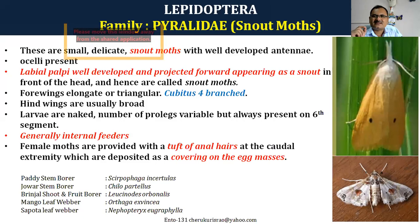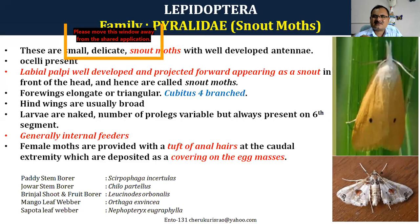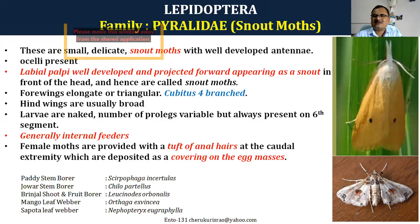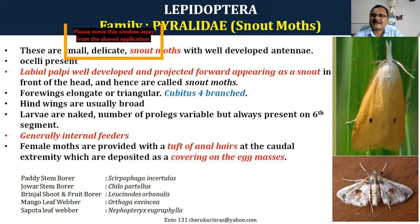Remember two important points about Pyralidae: one, the labial palpi are well developed and projected forward — that is why we call them snout moths. Two, they are internal feeders and stem borers. The third important point: the female has anal tuft hairs. If you see the female of any of these insects you'll find anal tuft hairs, and these are used to cover the eggs at the time of laying, protecting them from enemies.